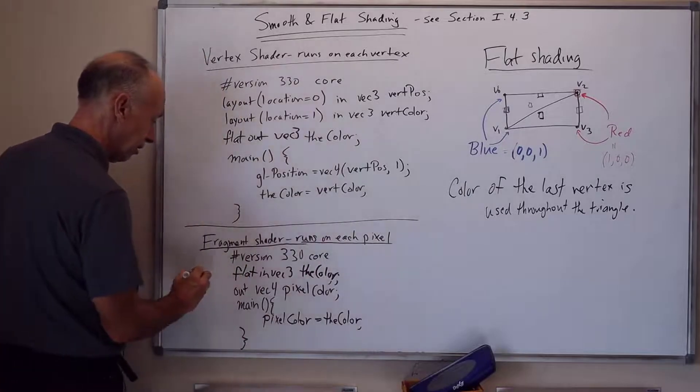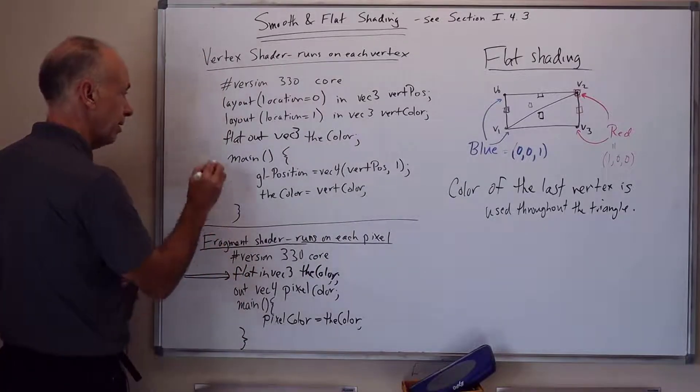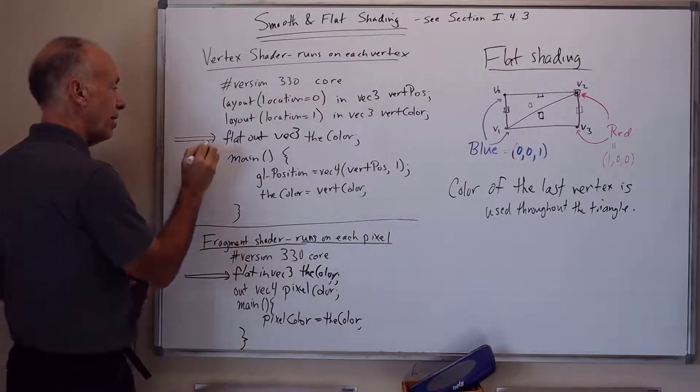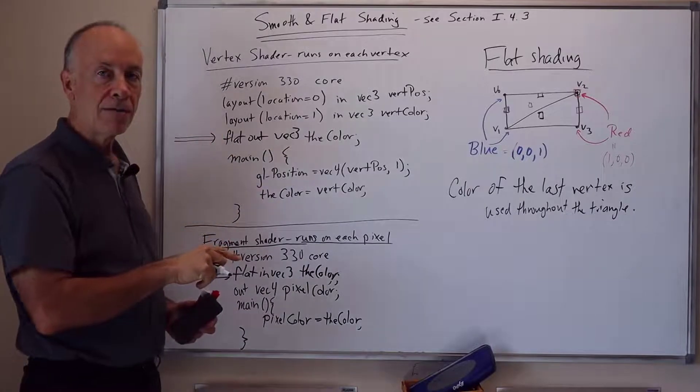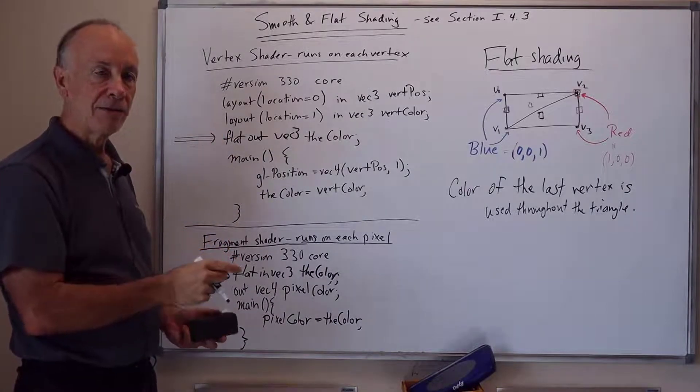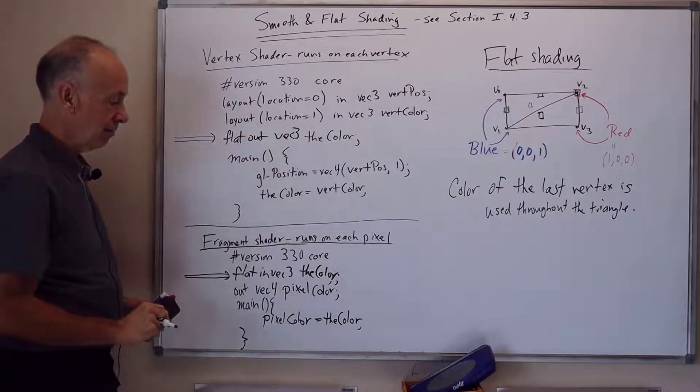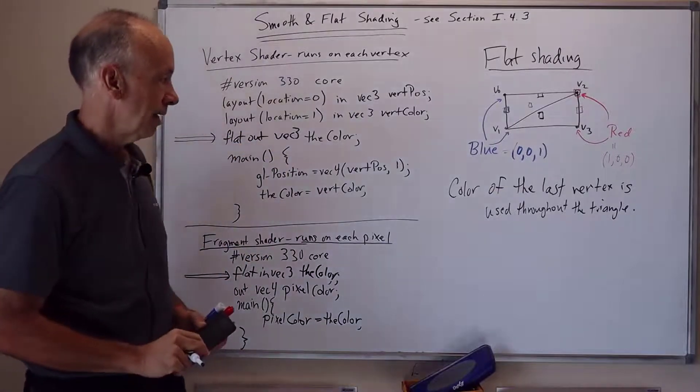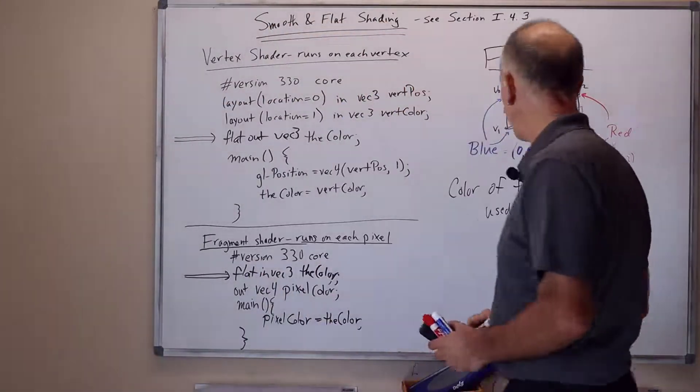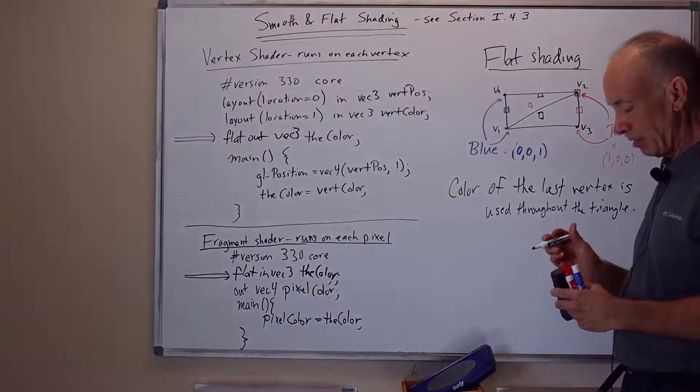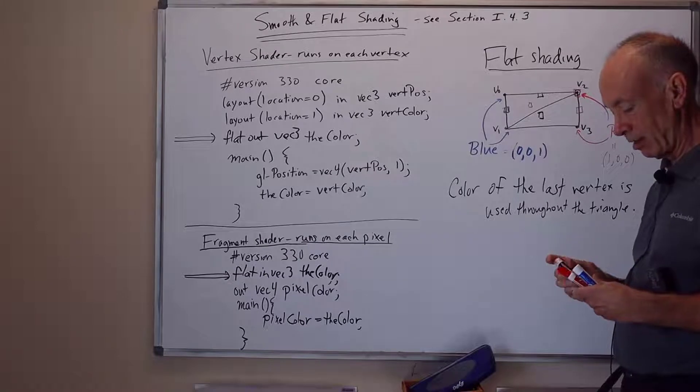So the only change we made to the programs was right here and right here. That was to put the modifier flat on the declaration of the variable the color. It's still an out color from the vertex shader and in variable to the fragment shader. And then what happens now is that every pixel in the triangle gets the same color.